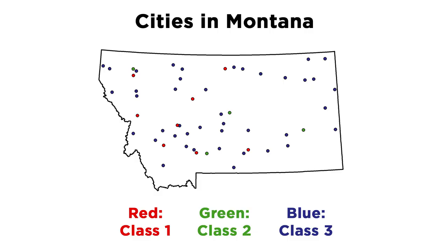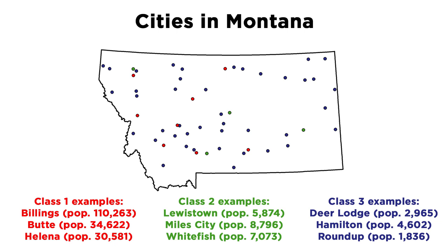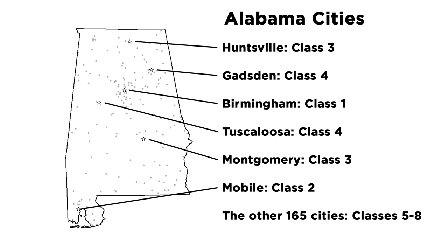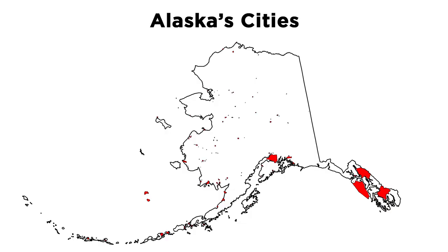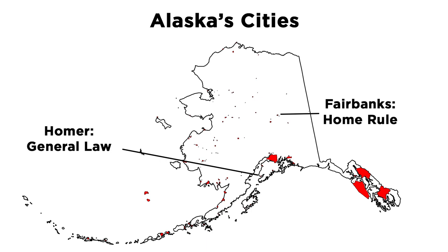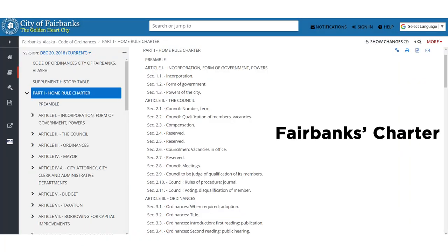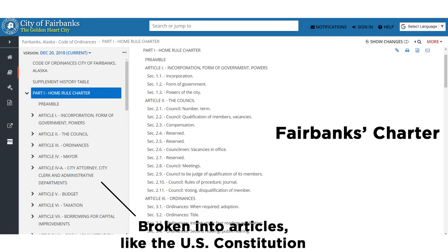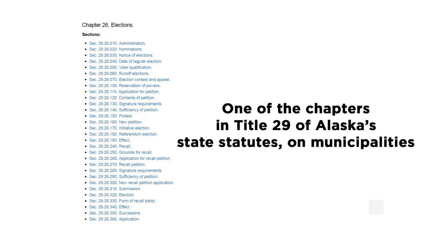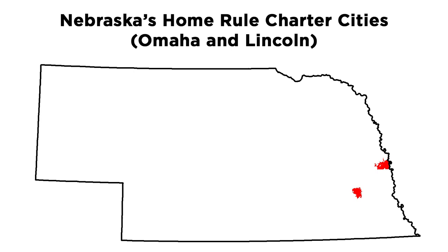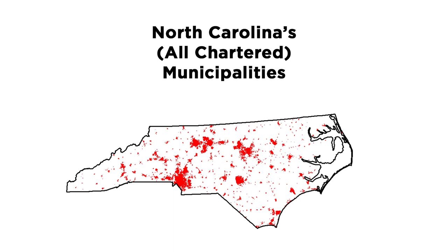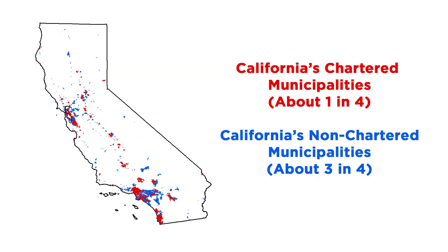States can also distinguish between types of cities based on a few different factors. One approach is to divide cities into classes based on population size so that they can place different requirements and give different powers to larger cities versus smaller ones. Alabama is an extreme example — they divide cities up into eight classes, and the top few only have one or two cities apiece. Another more fundamental way cities can vary within a state is based on their organization. Most states have a distinction between general law cities and charter or home rule cities. The basic idea is that charter cities operate under a charter, which is almost like a city constitution, while general law cities operate under rules given through state statutes. Charter cities often have more freedom to make decisions for themselves, and charters tend to be for larger cities.